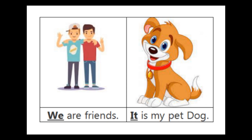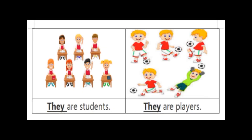They are given a dog picture and the sentence is 'It is my pet dog.' For showing dog, they are using I-T, it. Yahan mera dog hai. Then next picture, there are some children sitting on a bench, and the sentence is 'They are students.' Woh kaun students hai? Yahan sabhi ko batane ke liye T-H-E-Y, they.